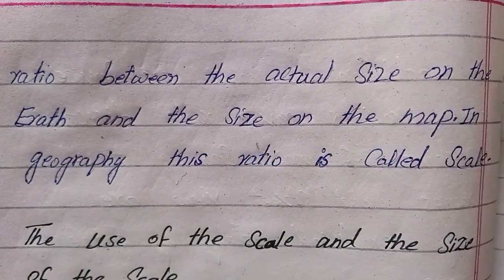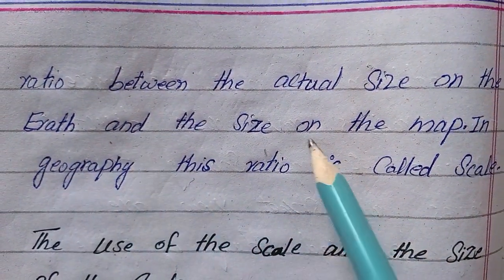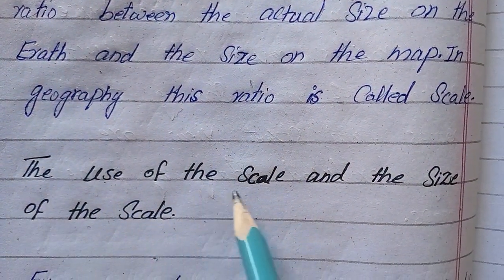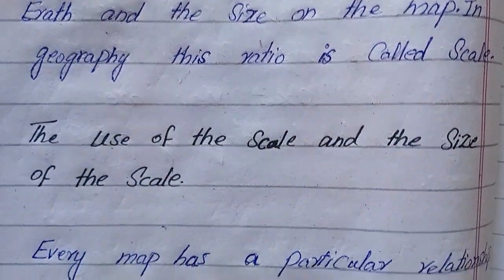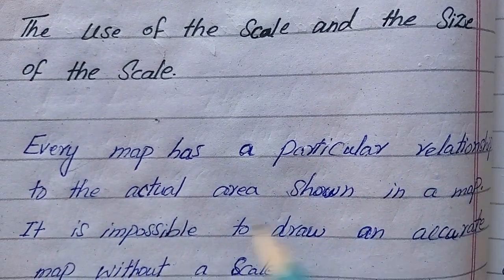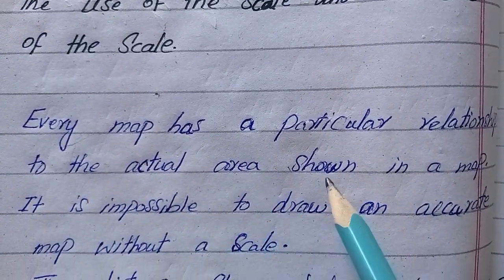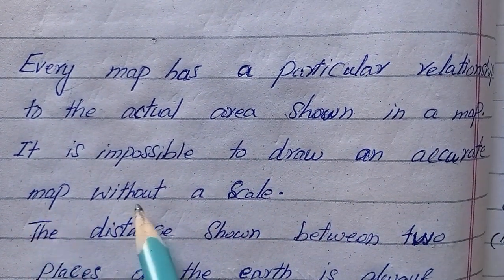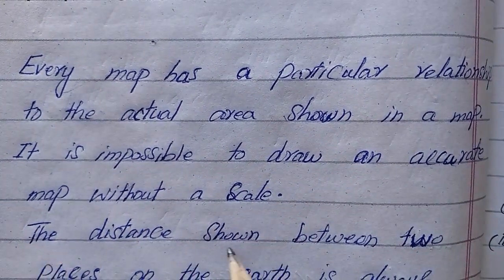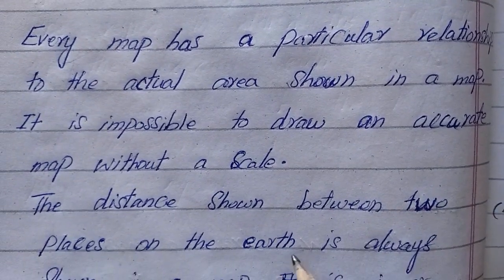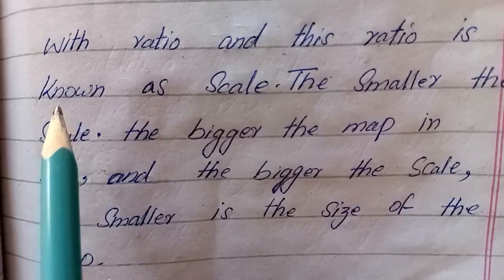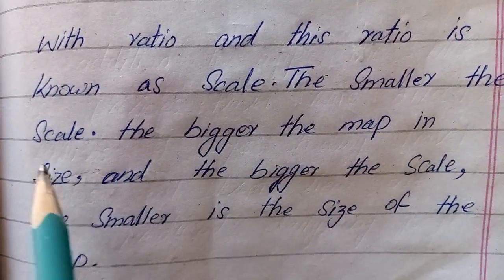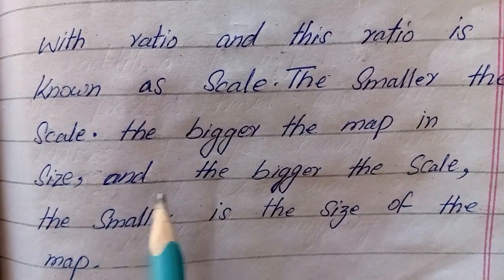Scale is the ratio between the actual size on the earth and the size on the map. In geography, this ratio is called scale. Every map has a particular relationship to the actual area shown. It is impossible to draw an accurate map without this ratio, and this ratio is known as scale.